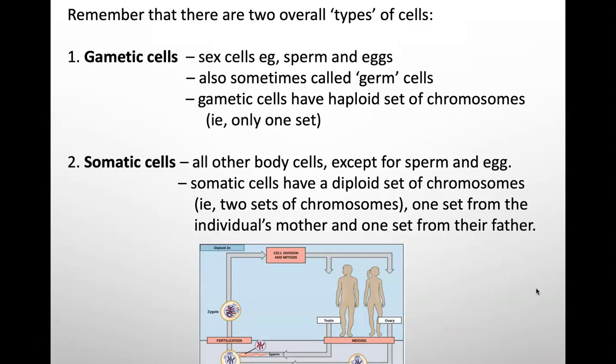Remembering in any multicellular organism, there are two types of cells. There are gametic cells. Gametic cells are a fancy term for saying your sex cells, for example, sperm and eggs in animals or in plants that would be the pollen and the ovum. Sometimes gametic cells are called germ cells or germline cells. Gametic cells have a haploid set of chromosomes, which means they only have one set of chromosomes.